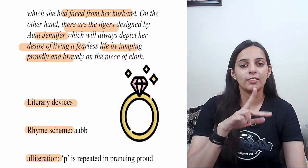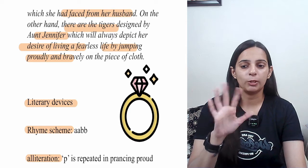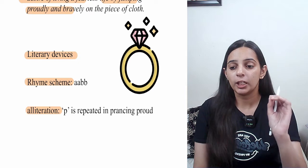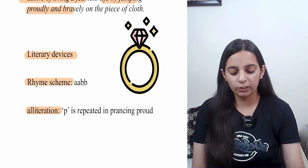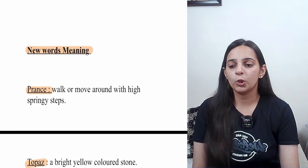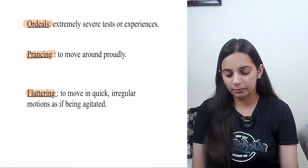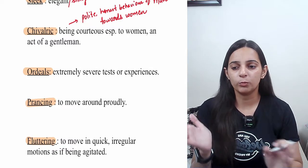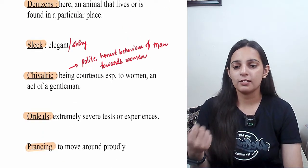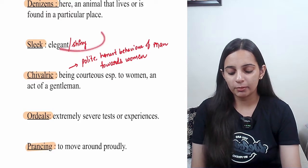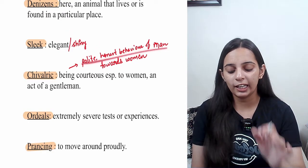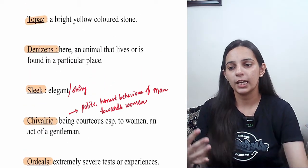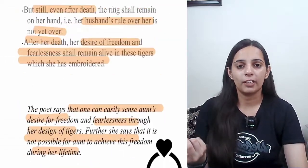Now let's look at the literary devices of the third stanza. The rhyming scheme is AABB. There is alliteration — the 'P' sound is repeated: 'prancing' and 'proud.' Now for word meanings: 'fluttering' means to move quickly; 'prance' means to move proudly; 'ordeals' means poor or difficult experiences; 'sleek' means shiny; and 'chivalric' means a man's polite and honorable behavior.